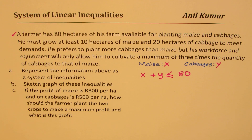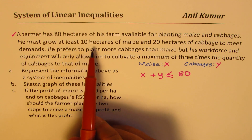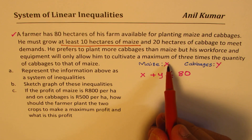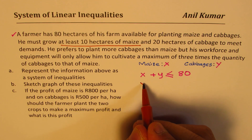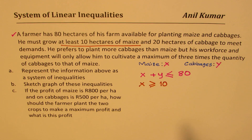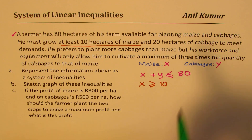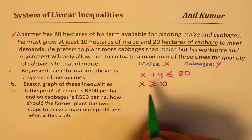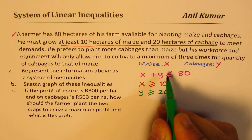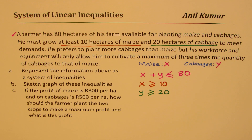The next constraint: he must grow at least 10 hectares of maize, so X ≥ 10. And at least 20 hectares of cabbage, so Y ≥ 20. These are inequalities we can write directly from the problem statement.